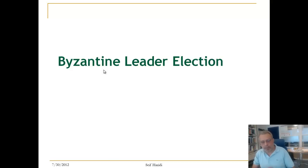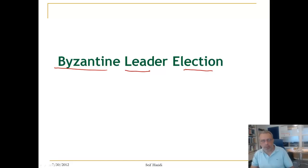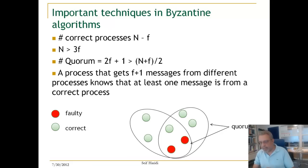In this unit, we are going to look at Byzantine leader election, and this is an application of Byzantine quorum that we just discussed in the previous unit. The scenario is we have a set of processes, some of them can behave arbitrarily, and we want to elect a leader among them. This is a section where we can see how we use the techniques or the properties that we described about Byzantine quorums.